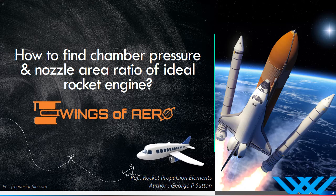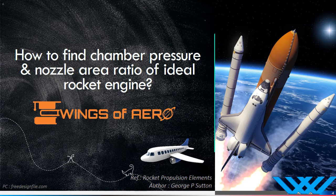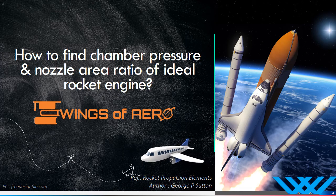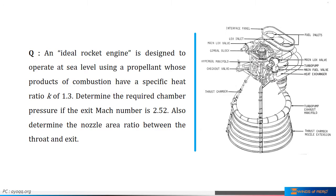Now, we are going to learn how to find chamber pressure and nozzle area ratio of rocket engine. Consider an ideal rocket engine which is designed to operate at sea level using a propellant whose products of combustion have a specific heat ratio of 1.3. Determine the required chamber pressure if the exit Mach number is 2.52. Also, determine the nozzle area ratio between the throat and exit.